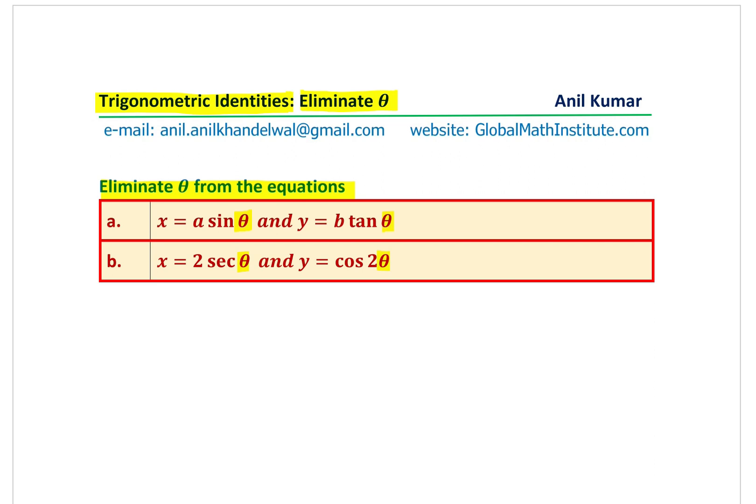Now, how do you really do it? Basically, you know that sine squared theta plus cos squared theta is equal to 1. So from the first question, what we could do is we can find what is sine theta and what is cosine theta. Once you get those values in terms of x, a, y, b, in that case, you can substitute in this particular equation and get your answer.